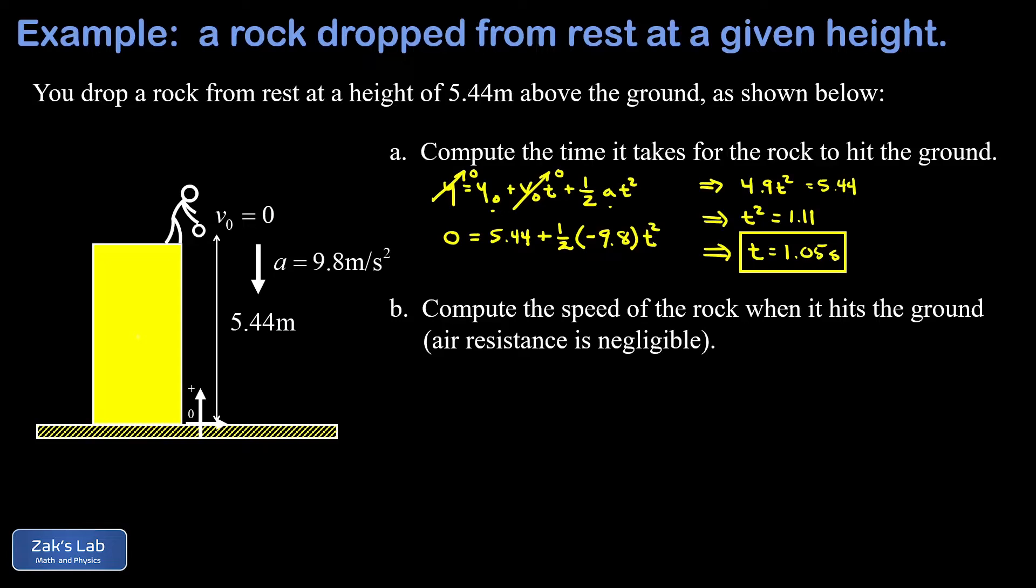In part B, we want the speed when the rock hits the ground. And for this, we can just use our kinematic equation for the velocity as a function of time. So that's v equals v-naught plus at.